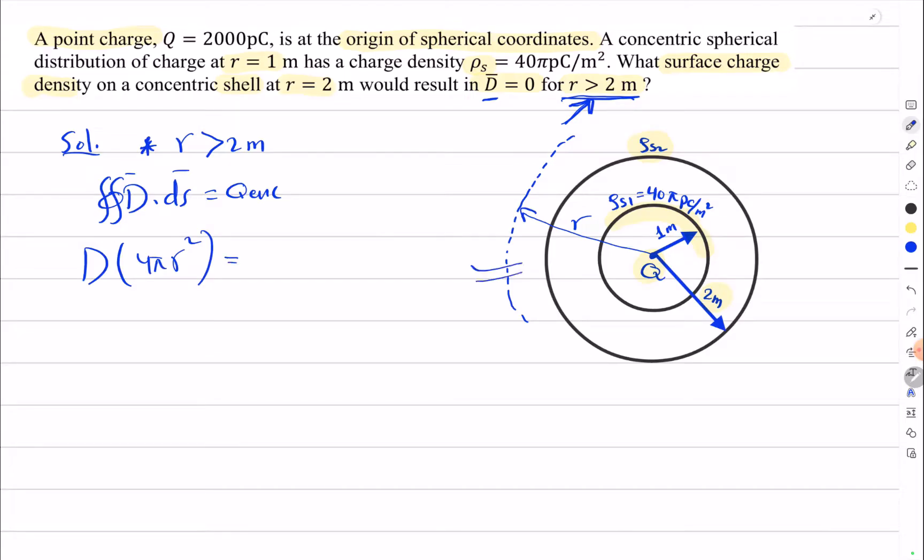For the right side, we notice the enclosed charge includes the point charge Q, plus ρ_s1 located at the one meter shell. We multiply ρ_s1 by S1, the surface area of this shell.